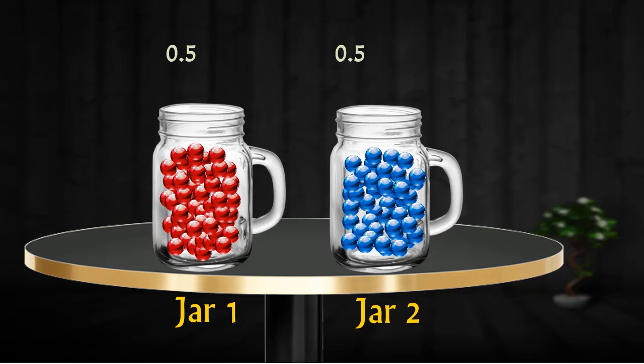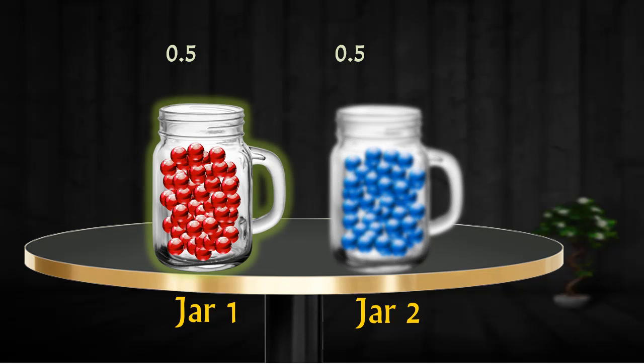Now, let's see how we can optimize the solution to increase the winning chances. Let's go back to the first case where we are considering that we choose jar 1 at random.